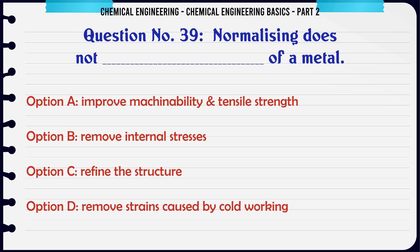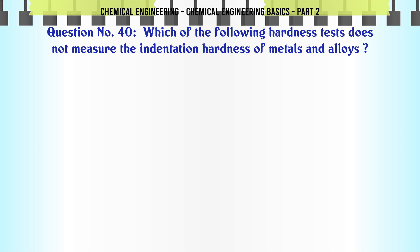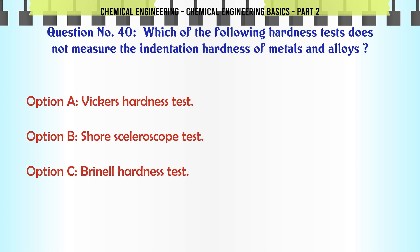Normalizing does not offer which benefit to metal? a) improve machinability and tensile strength, b) remove internal stresses, c) refine the structure, d) remove strains caused by cold working. The correct answer is: remove internal stresses.